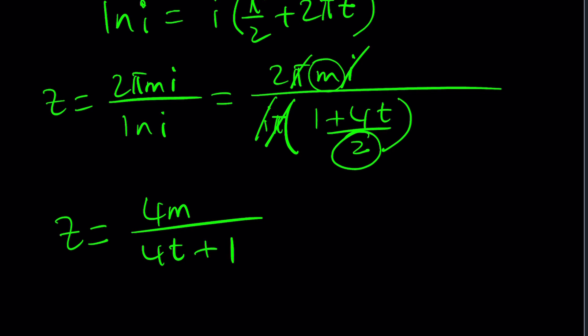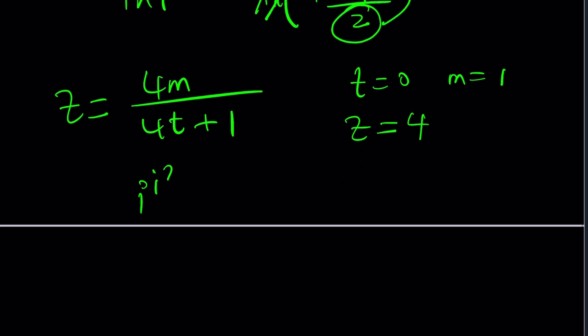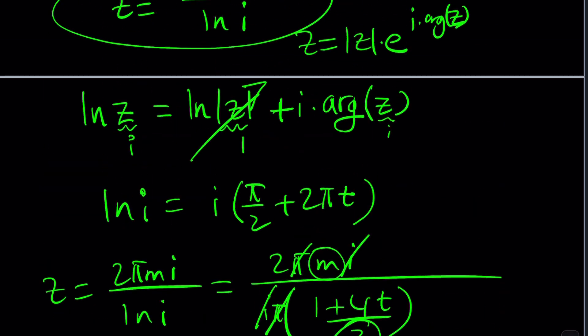Now what is that supposed to mean? M and T are all integers. For example, if T is equal to 0 and M is equal to 1, then Z becomes 4 divided by 1, which is 4. So you're saying Z equals 4 is going to work? Yes, let me tell you why. It's fun. i to the power i to the Z—if Z is equal to 4, you get i to the power i to the 4th. But we know that i to the 4th is 1, so i to the first power is i. You see, it satisfies the equation. There are many more solutions which you can find.